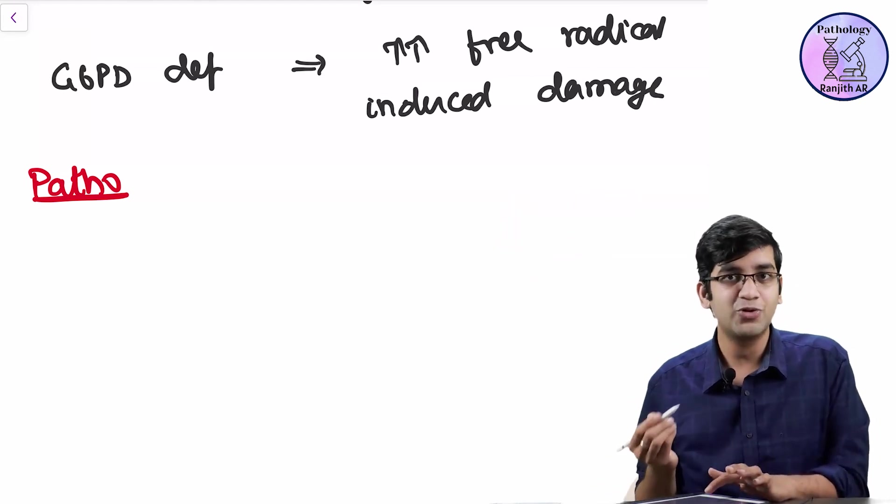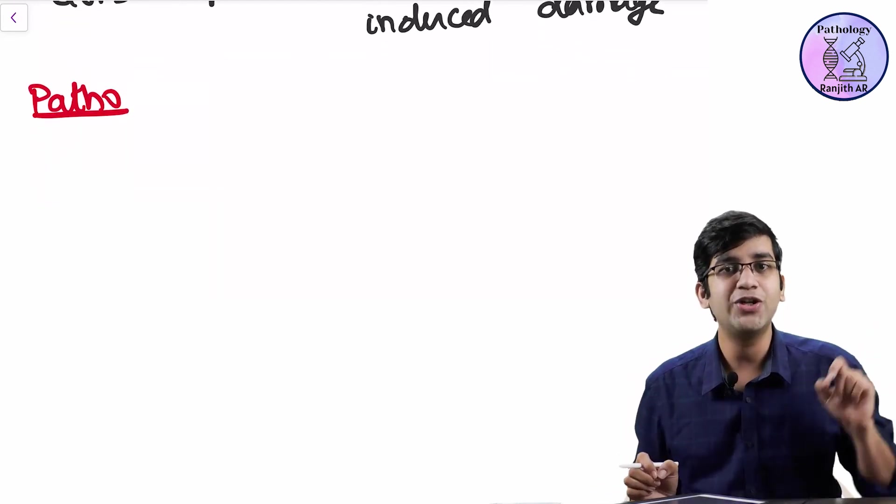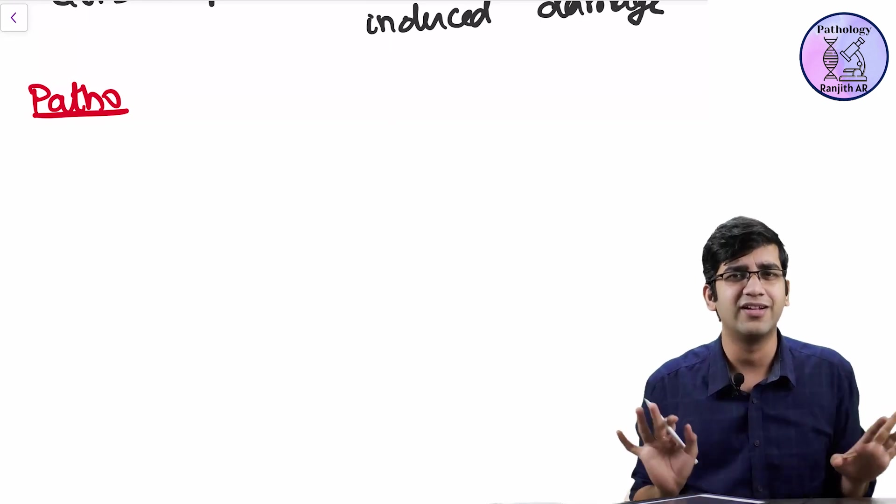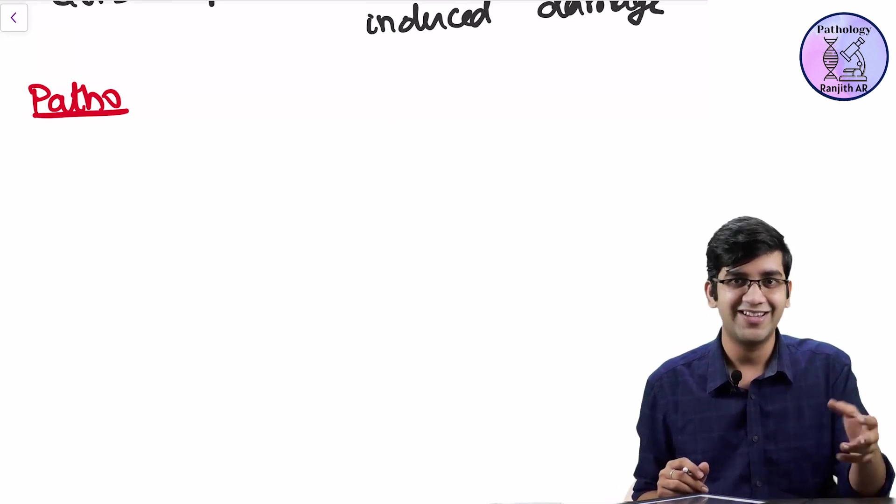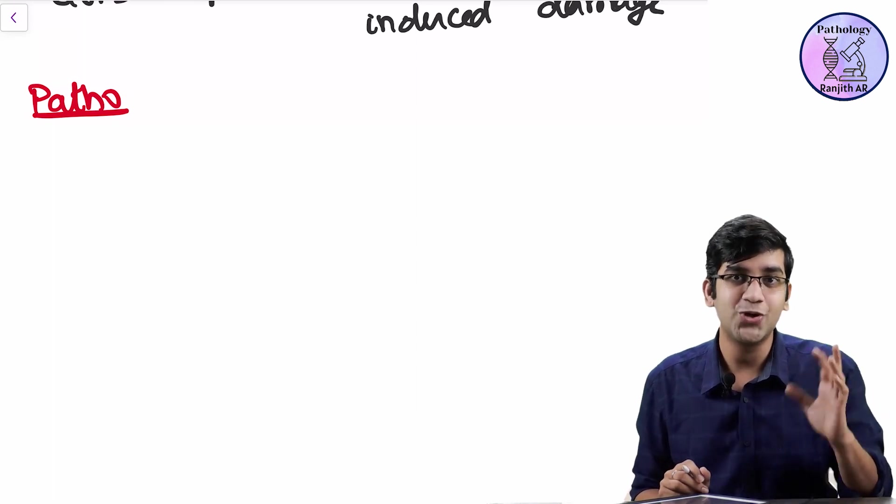So we know everything about G6PD deficiency just by knowing that it's going to destroy free radicals. That's all. Nothing else. So now we are going to extrapolate whatever we know. Ready? Go for the write. I want you to write in your own words. Right?